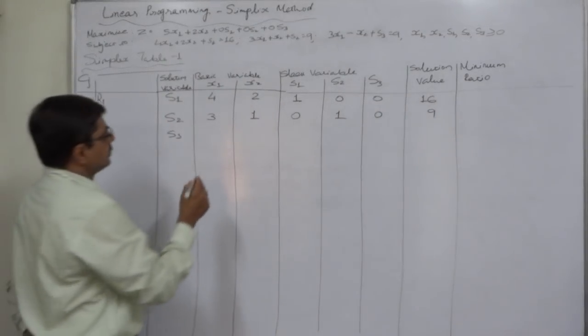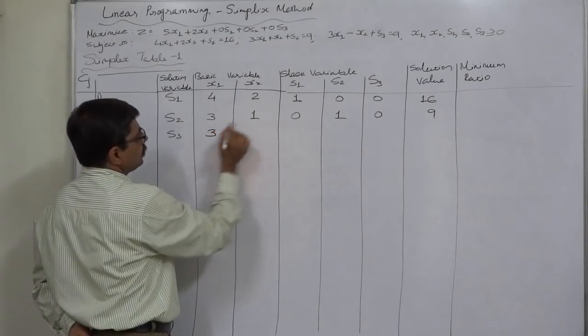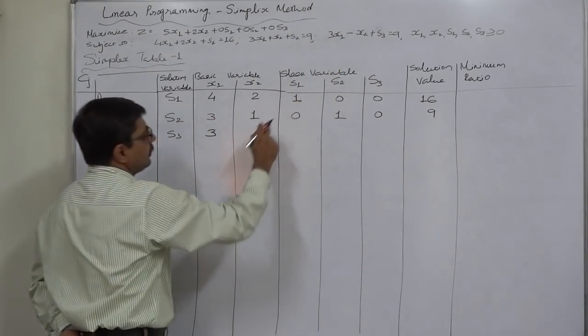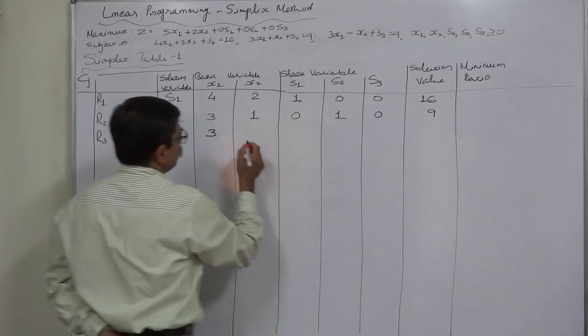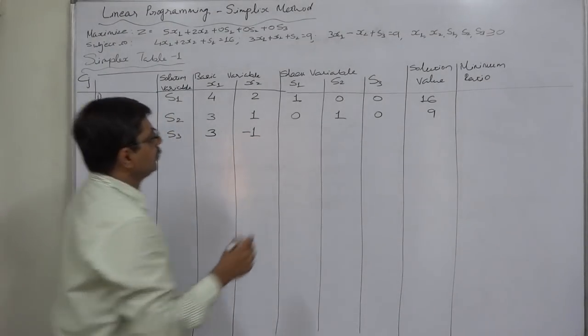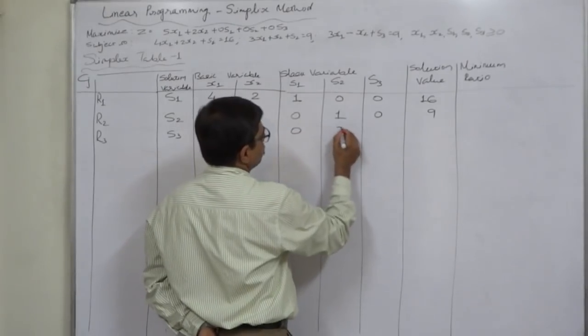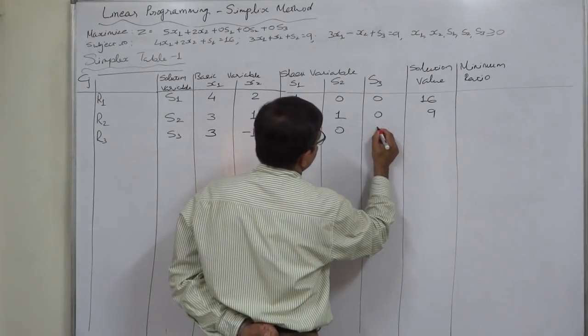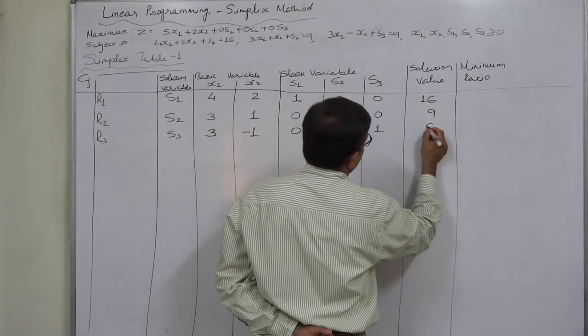Similarly in the third case the coefficient of X1 is 3, it is minus X2 so coefficient of X2 will be minus 1, no S1 so 0, no S2 so 0, S3 coefficient 1 and solution value 9.